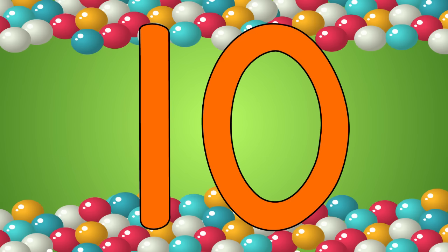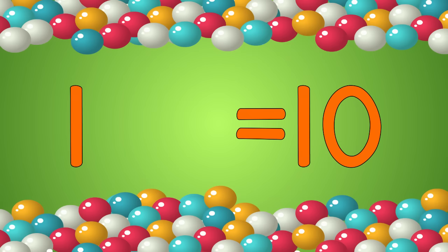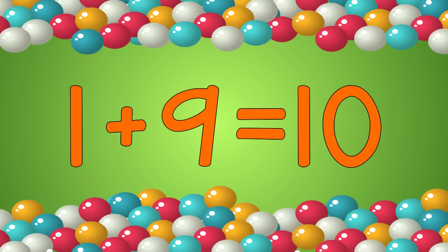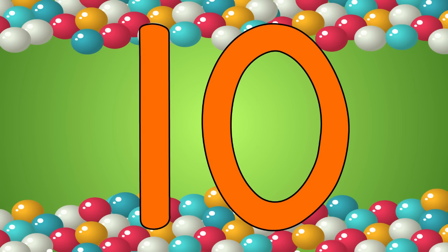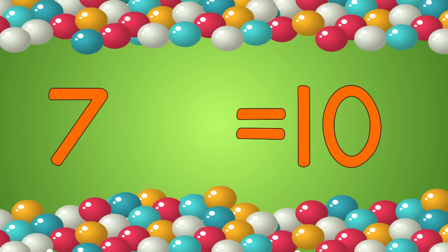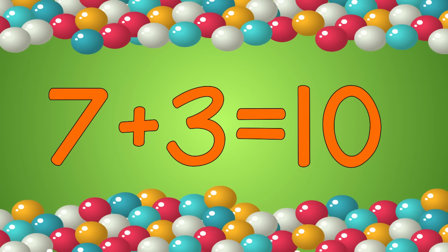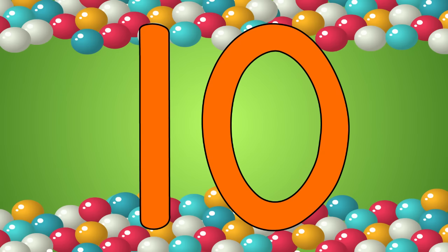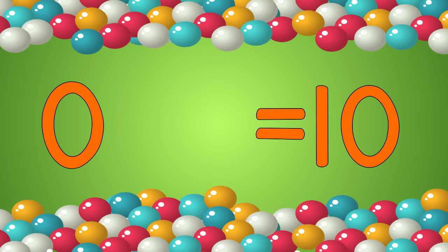To make ten you have 1 plus 9. To make ten you have 7 plus 3. To make ten you have 0 plus 10.